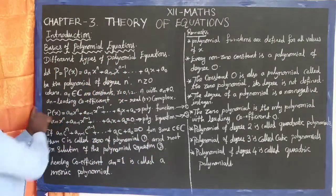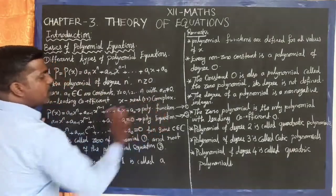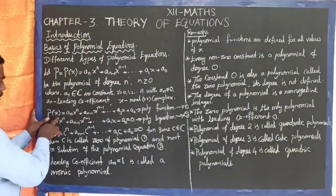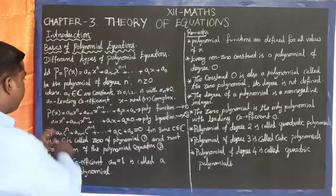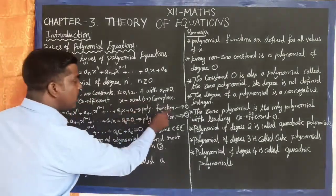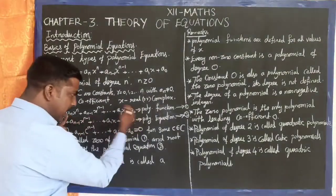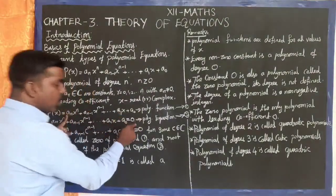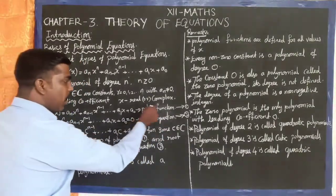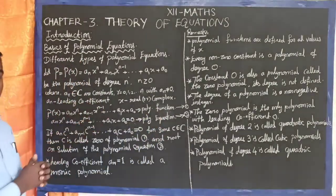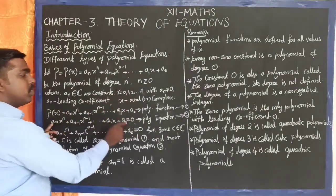P(x) is a polynomial function, and f(x) is a function. If the polynomial is set equal to 0, it becomes a polynomial equation. So polynomial functions are P(x), and polynomial equations are P(x) = 0.